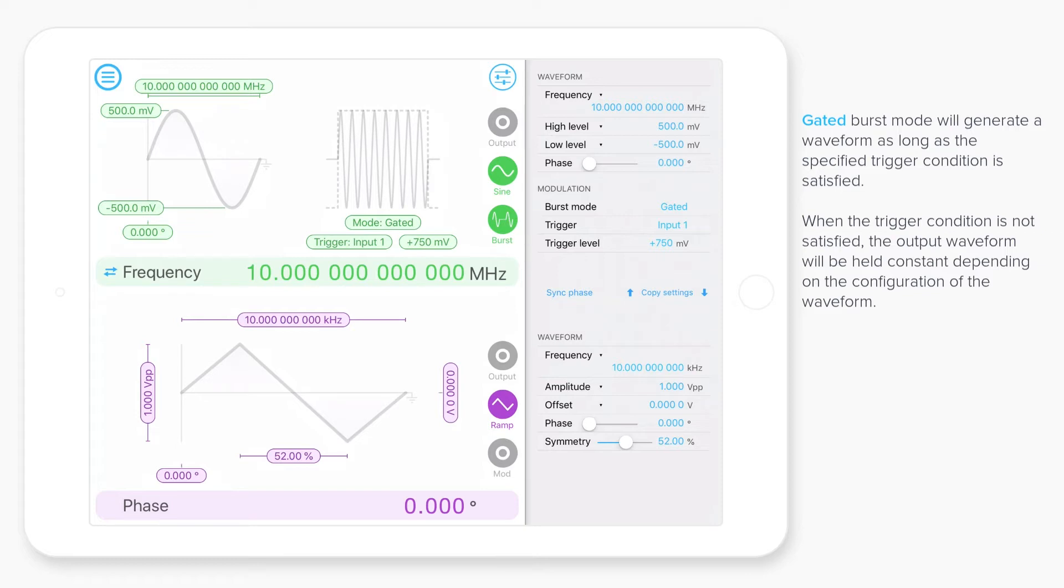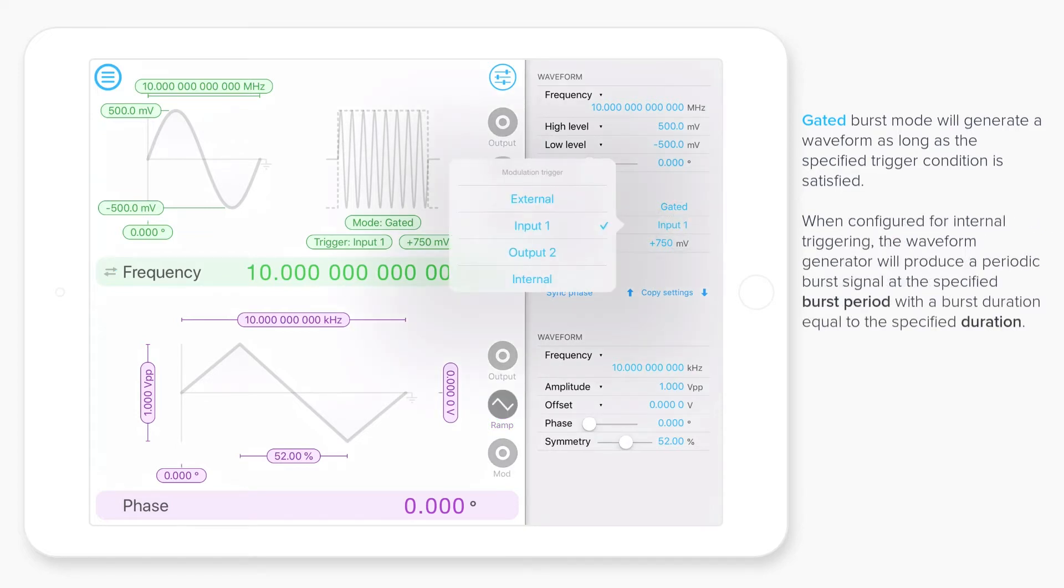If we instead use internal triggering on this particular one, then what it will instead do is generate a periodic burst signal. So we can specify the burst period, which is the time between bursts and the burst duration. So the way it's currently set up, every one second, we will have 100 milliseconds worth of output, followed by 900 milliseconds of nothing.